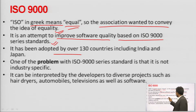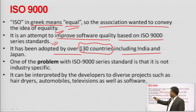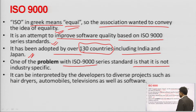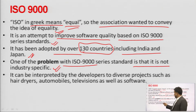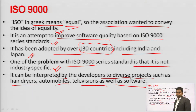It has been adopted by over 130 countries, including India and Japan. One problem with the ISO 9001 series standard is that it is not industry-specific — it can be used to standardize anyone who maintains quality. It can be interpreted for developer deliverables such as hair dryers, automobiles, television, and software also.